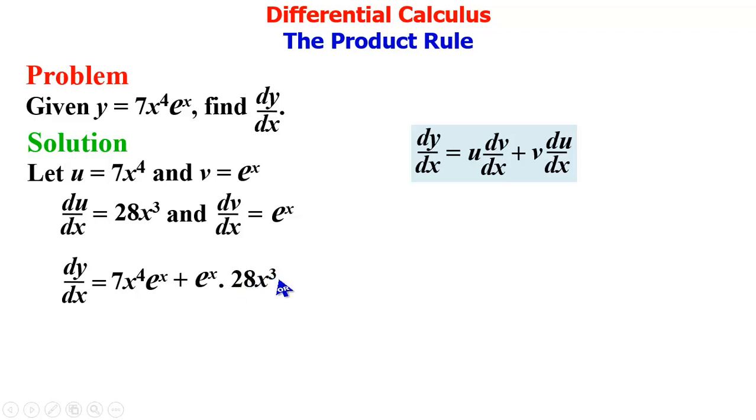Rearranging and simplifying further, we have 7x raised to the power 4 e raised to the power x plus 28x raised to the power 3 e power x. We can factor out since 7x raised to the power 3 is a factor.